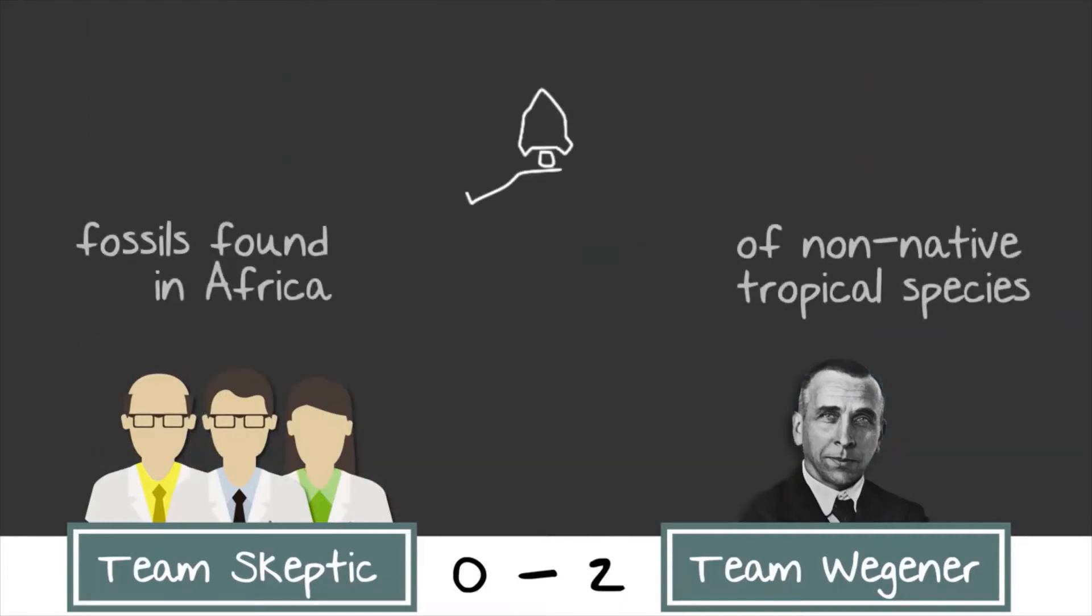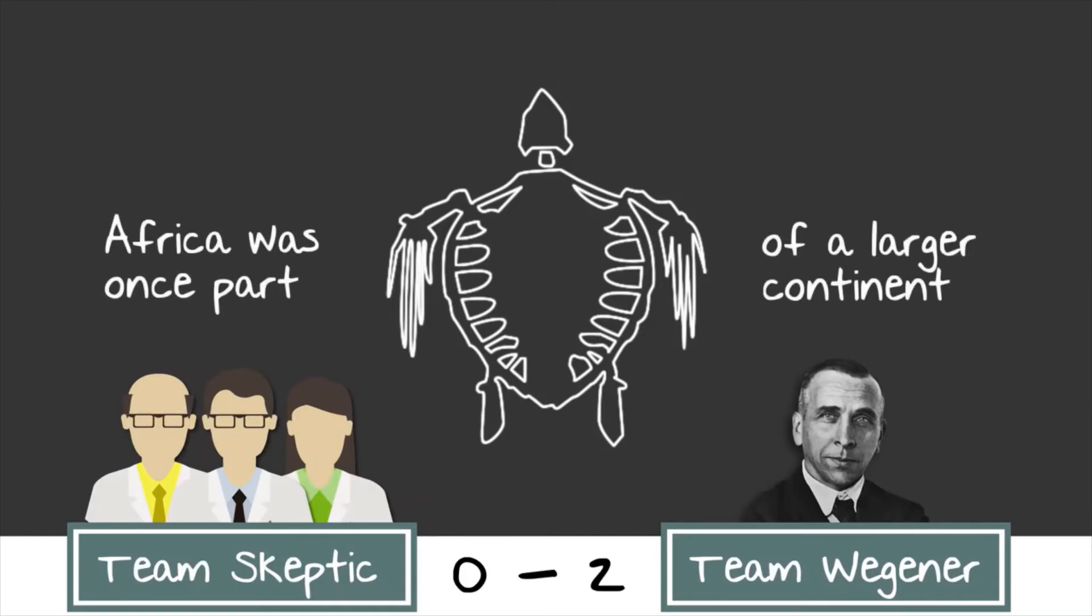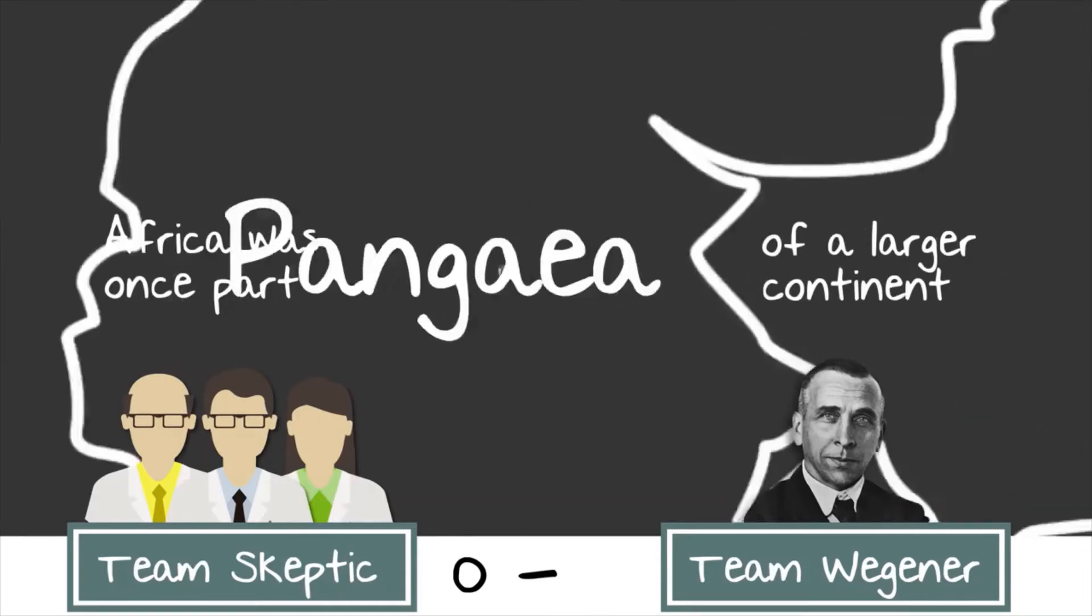And then there was the fossil evidence. Fossils of tropical animal and plant species have been found in Africa and other places on Earth that are less than tropical. One plausible explanation was that Africa was once part of a larger continent that was home to these tropical plants and animals. Remember Pangaea?